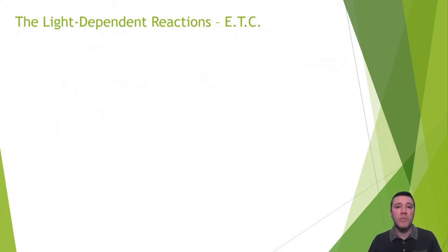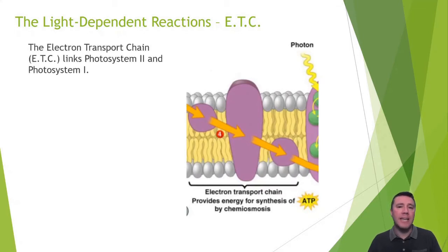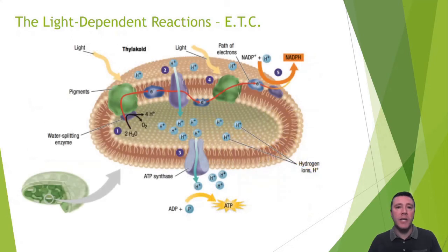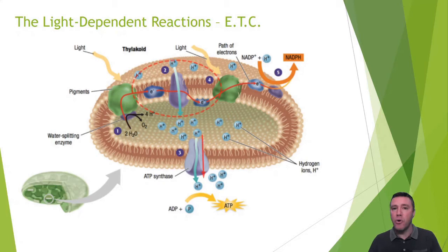After photosystem II comes the electron transport chain, or ETC. The ETC links photosystem II and photosystem I together. It is a series of proteins embedded in the thylakoid membrane that passes electrons from one protein to the next, much like in a relay race. As electrons travel from protein to protein in the ETC, this allows, ultimately, for the production of ATP. This is accomplished because the proteins of the ETC utilize the energy from the transfer of electrons to actively transport protons from the stroma into the thylakoid space. Now that a concentration gradient of protons exists, through facilitated diffusion, the protons travel back into the stroma through an ATP-forming protein called ATP synthase.